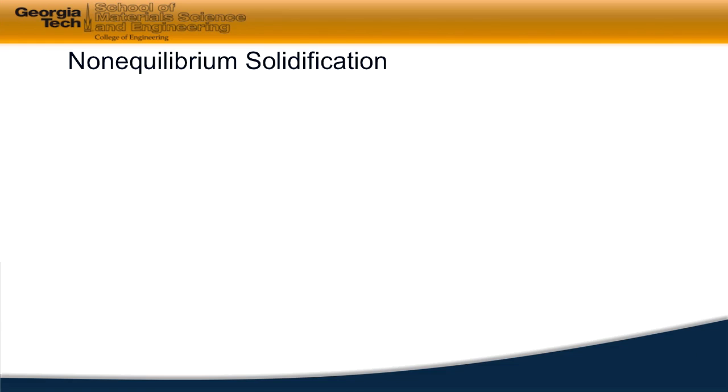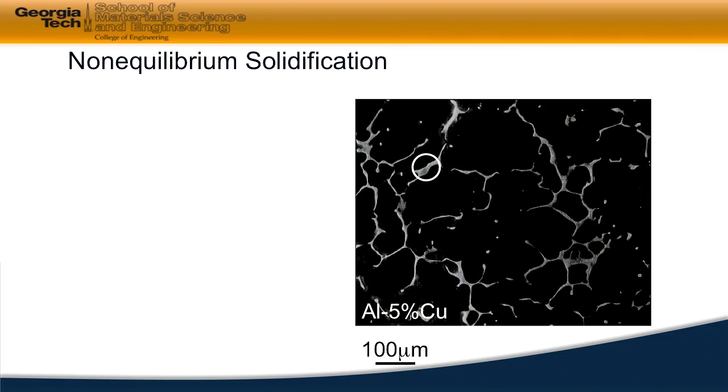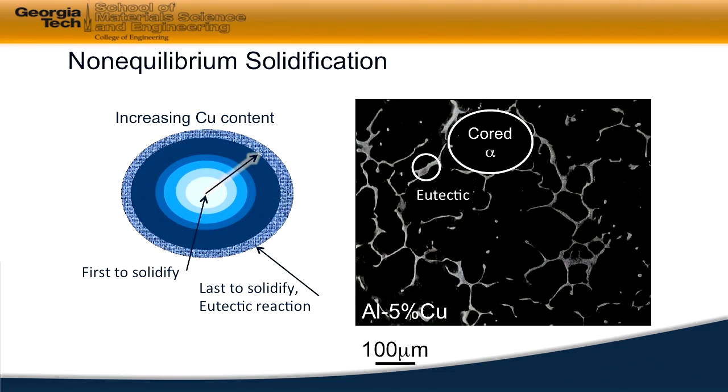Let's look at that micrograph again. There is our eutectic in that circle, and now we have the cored alpha phase. Schematically, we're seeing an increase in the copper content from the first thing to solidify in the center of this structure. As we go from the center out, the composition increases up to the maximum solid solubility as given on the phase diagram. Any liquid left over is of the eutectic composition, so the last thing to solidify is the eutectic reaction. If we put a number of these together, we get regions of cored alpha separated from other regions by the eutectic in those channels.